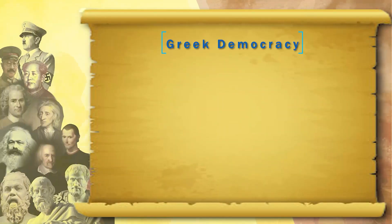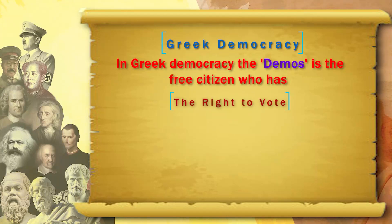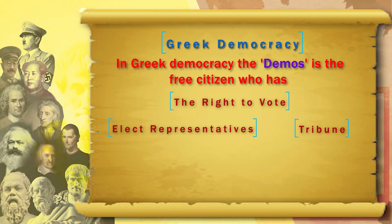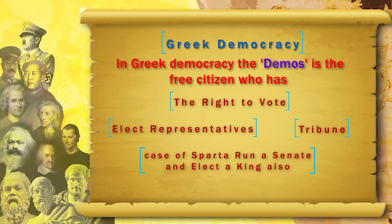There is a distinction between Greek democracy and Roman democracy. In Greek democracy, the demos — the free citizen — is the person who has the right to vote, to elect the representatives, to elect the senate and the tribune. And in the case of Sparta, to run a senate and elect a king also.